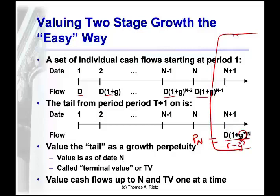Then what you do is divide that by interest to bring it back to today, and divide each dividend by interest to bring them back to today, and add them up. You'll have the value of the stock today, and it doesn't matter how many different growth rates there are, or whether every single dividend is forecast one at a time between now and that terminal period.